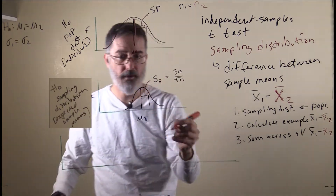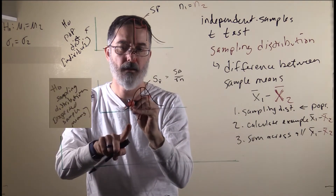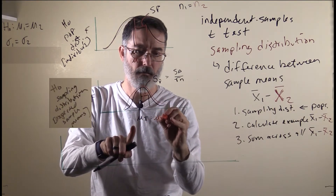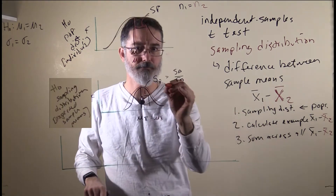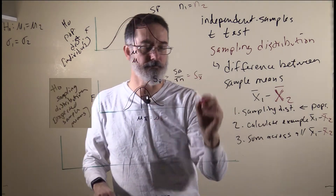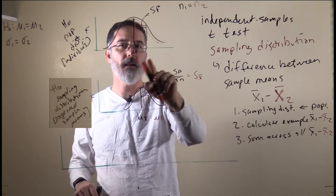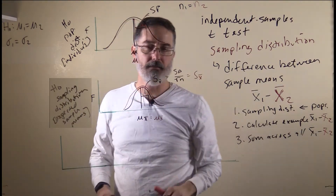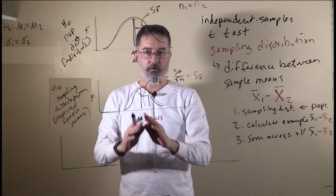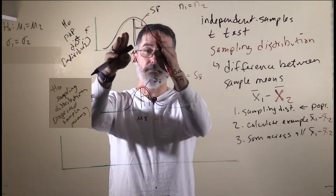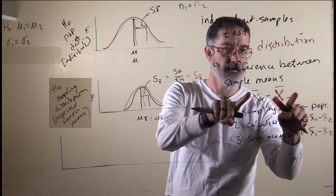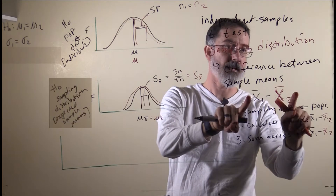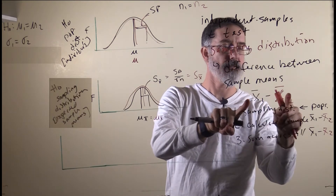These are the expected sample means from the black population if the null hypothesis is true. We can do the exact same thing for the red distribution, and it is going to perfectly overlap with the black distribution because they have the same mean, the same standard deviation, and the same sample size. Now we have figured out what kind of samples we expect from each population. But what we need is the difference between two samples, because ultimately that is what our data looks like — we will have sample one and sample two, and we calculate that difference score.